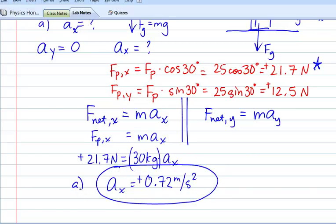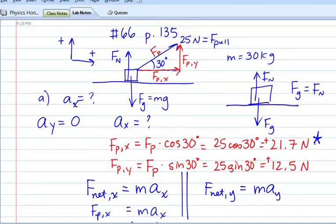Part B, however, says what is the normal force exerted on the box by the ground? So now we want to go back to our diagram and we're being asked to find the normal force. The temptation is to say that the normal force is equal to the force of gravity because of the diagram I've drawn here on the right. Normal force is up, gravity is down, they've got to be equal, right? No.